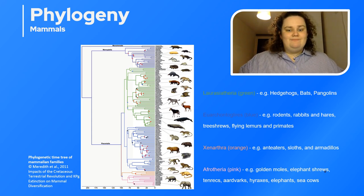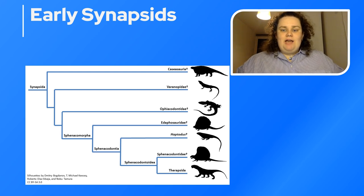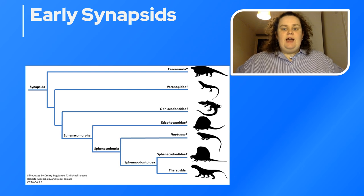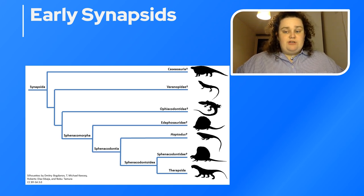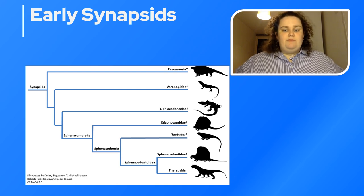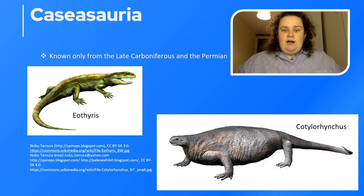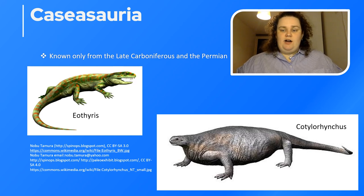Now we move on to the early synapsids. Primitive synapsids are usually known as pelycosaurs, or pelycosaur-grade synapsids. You might hear the term 'mammal-like reptiles' but this is no longer used — primitive synapsids are referred to as stem mammals or proto-mammals. They were the largest terrestrial vertebrates during the Permian, and their numbers and diversity were reduced by the Permian-Triassic extinction. By the end of the Permian, all the older forms of synapsids — the pelycosaurs — were replaced by the more advanced therapsids, which include the lineage we come from. We start with the Caseosauria, known from the late Carboniferous and the Permian, with two families: the small insectivorous or carnivorous Eothyrididae and the large herbivorous Caseasidae.